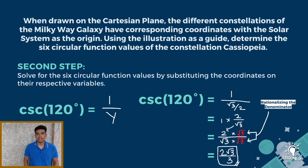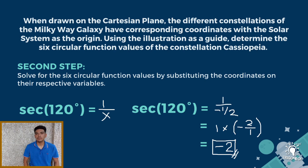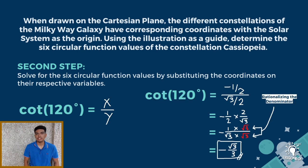Let's now look for cosecant theta. Cosecant theta is 1 divided by y. Therefore, 1 divided by square root of 3 over 2. Rationalize the denominator. We have 2 square root of 3 divided by 3. For secant theta, we have to divide 1 by x. Thus, 1 divided by negative 1/2. We have negative 2, and that is our secant theta. Lastly, for cotangent theta, we have to divide x by y. That becomes negative 1/2 divided by square root of 3 over 2. Apply the operational rules and rationalize the denominator. We have negative square root of 3 over 3.